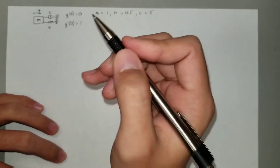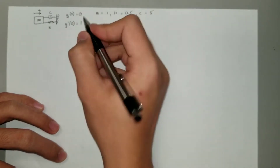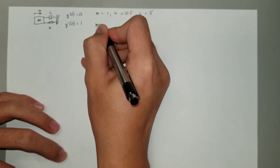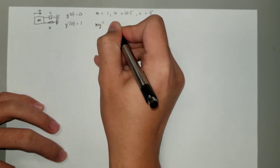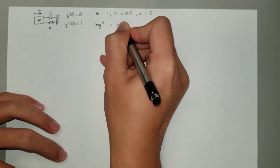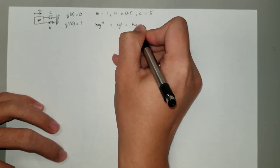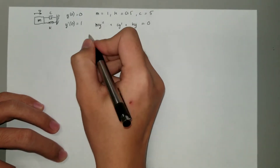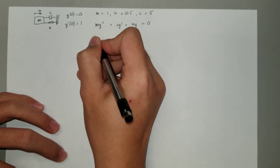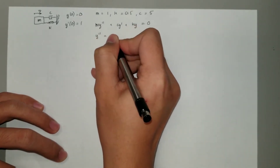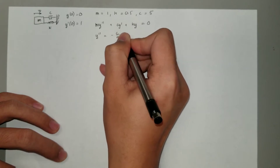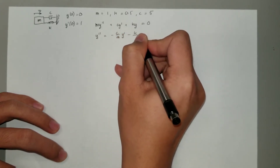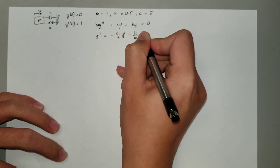We'll start by writing down the equation of the system: m y'' plus c y' plus k y equals zero. This can be rewritten as y'' equals negative c over m times y' minus k over m times y.